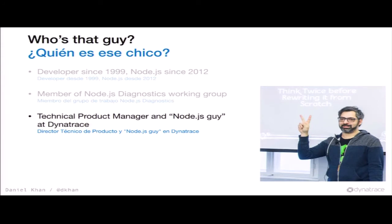I'm technically product manager and Node.js guy at Dynatrace. We are a performance monitoring company, around 2,000 people. Everything that has something to do with Node.js kind of goes through my inbox there. I'm also a lecturer for Node.js at the local university.